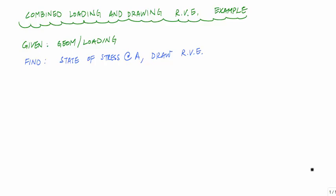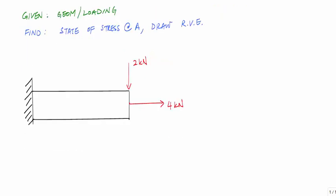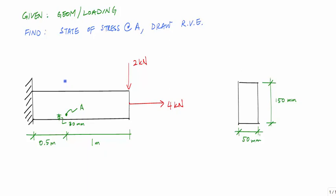We're going to be given a structure — in this case, a cantilever beam. I would like to find the state of stress at point A, which is one meter from the free end of the cantilever and 30 millimeters from the bottom of the cross section. The cross section of this member is rectangular. If I look at a cut at line A, I would see point A on the right side of the cut, 30 millimeters from the bottom. What we want to do is calculate the state of stress at point A and draw a representative volume element that describes that state of stress.